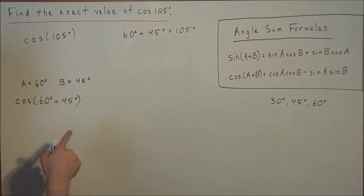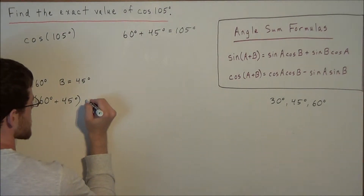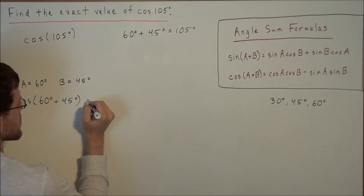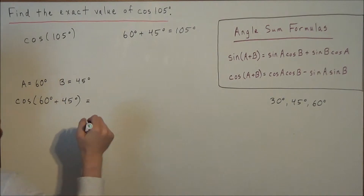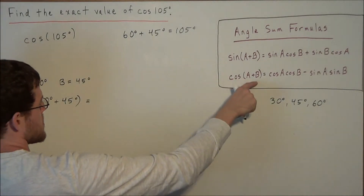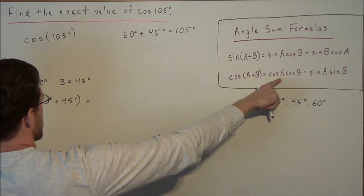So now for the next line, what we could say is, what we could set this equal to — we have the cosine of A plus B is equal to cosine of A.